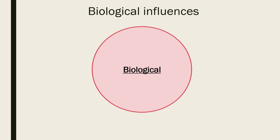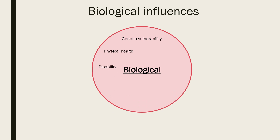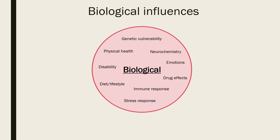Biological influences on health include an individual's genetic makeup. Many disorders have an inherited genetic vulnerability. The greatest single risk factor for developing schizophrenia, for example, is having a first degree relative with the disease. Physical health and whether the individual has a disability or history of physical trauma or infection can also play a role. Neurochemistry, so the levels of certain neurotransmitters or hormones, also play a key role in health. Other examples of biological influences include drug effects, diet and lifestyle, the immune and stress responses. As emotions involve a physiological response, they can also be considered a biological influence.